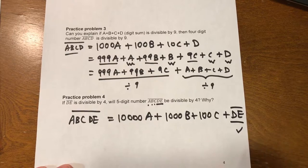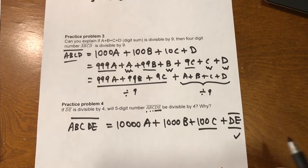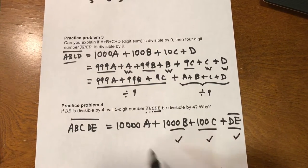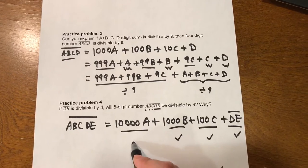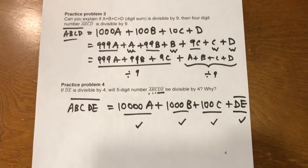DE can be divided by 4. This 100 can be divided by 4, which is 25. And this, of course, can be divided by 4. And this first term, you have the 10,000 in front that can also be divided by 4. So therefore, the whole number can be divided by 4.